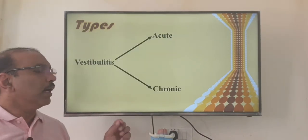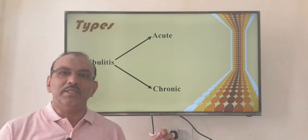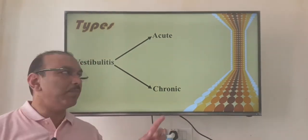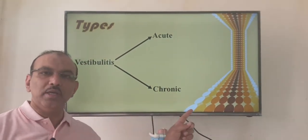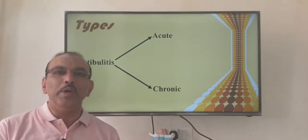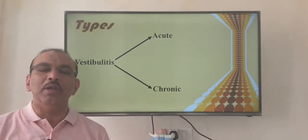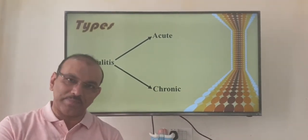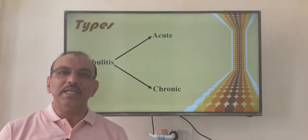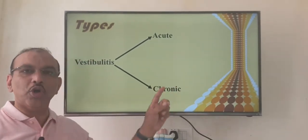There are two types of nasal vestibulitis depending on duration: it can be acute or chronic. Acute means it lasts only a few days, while chronic means it persists for more than three months. The common presentation depends on whether it is acute or chronic.